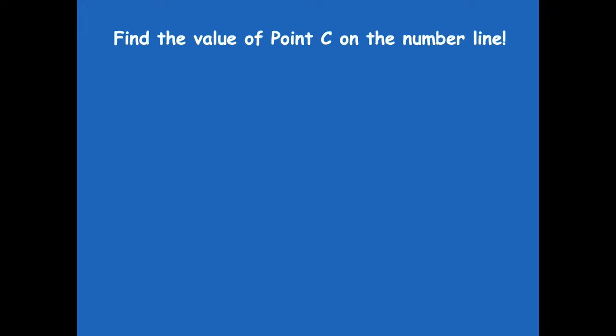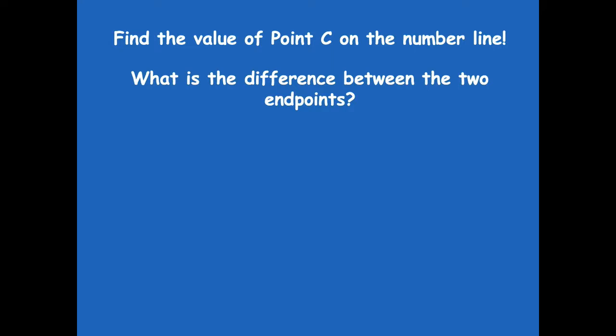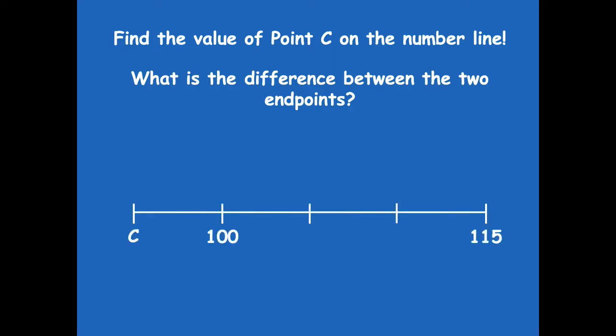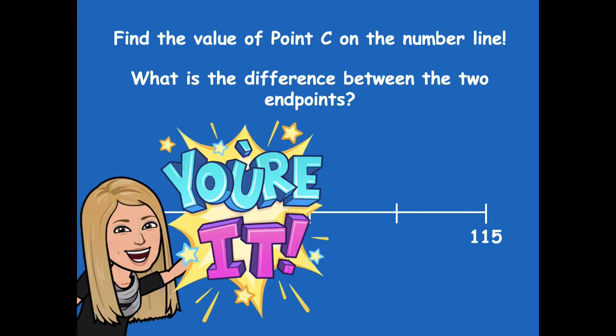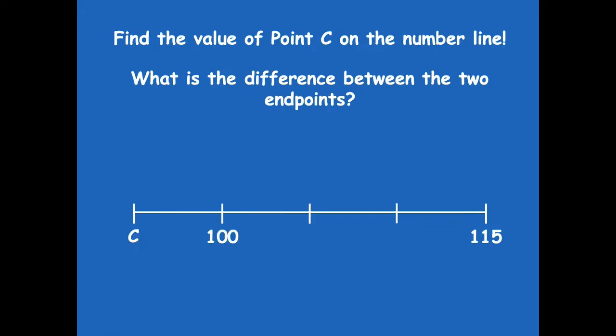Find the value of point C on the number line, and then find the difference between the two endpoints. Here's your number line — pause the video, find the value for point C and the difference between the endpoints, and then click play when you're ready to go over it together.